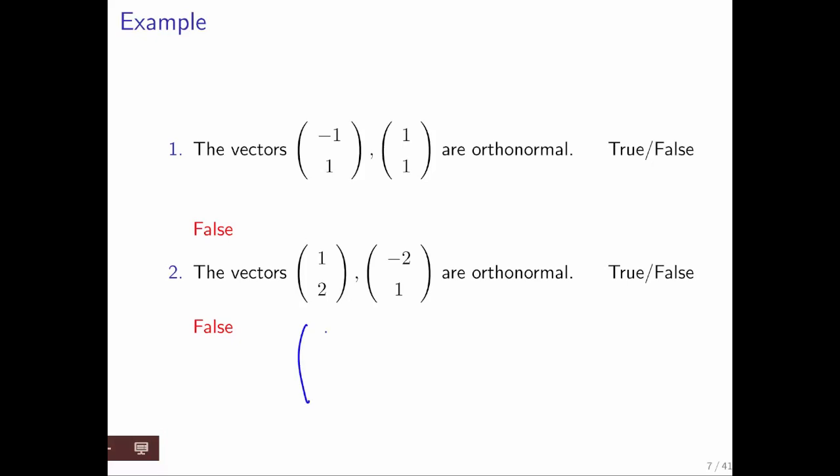Again, what we could have done is taken the first vector, divided it by its length, and the second vector, and divided it by its length. And you would have ended up with two vectors that are mutually orthonormal.